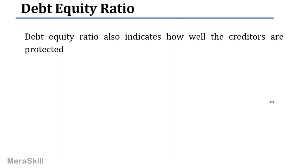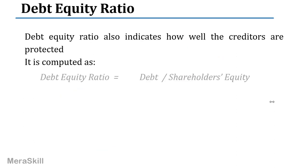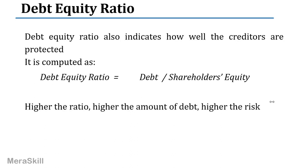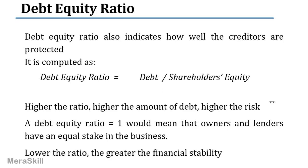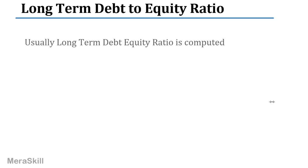The next ratio is the debt equity ratio, which shows how well creditors are protected by the shareholders' equity. Higher the ratio, higher is the amount of debt. A debt equity ratio of 1 means that the owners and lenders have an equal stake in the business. We also have a financial leverage ratio similar to that. Lower the ratio, greater the financial stability.